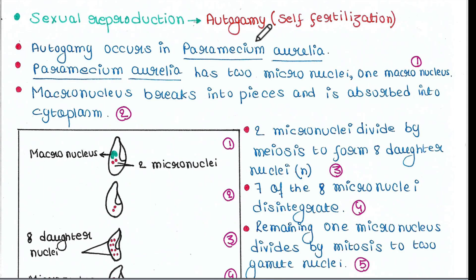Autogamy specifically occurs in Paramecium aurelia. Paramecium aurelia has two micronuclei and one macronucleus — this is an exceptional case you have to remember. The two red dots you can see are the two micronuclei, and the green one is the macronucleus.